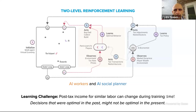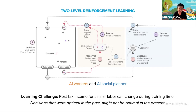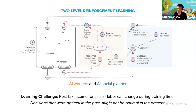Rob asks whether the spatial nature of the environment is expected to have a big impact on the results. It does have an impact. There could be spatial bottlenecks — you can block off access to resources, the proximity of an agent to a resource matters, and you can use barriers to restrict access to resources. The geometry matters a lot in terms of what the agents can actually do.